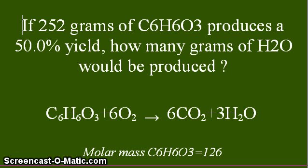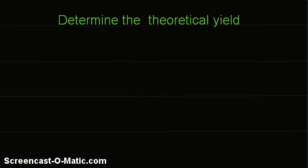The molar mass of C6H6O3 is 126. The first step would be to determine the theoretical yield. The theoretical yield can be found by writing the equation and using stoichiometric ratio.